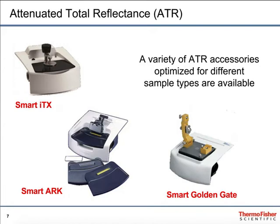There are a number of configurations of attenuated total reflectance accessories. The Smart ARC is what's called a multi-bounce, which means the IR beam bounces multiple times along the crystal, giving multiple interactions with the sample so that you get a longer path length in essence. The Smart ITX and the Smart Golden Gate are designed to be single bounce, meaning you only interact once with the sample. All three of these, and most of the other accessories, can be configured with different crystals — germanium, zinc selenide, or diamond — allowing you to tune your depth of penetration, the number of interactions, and the robustness to suit your environmental conditions.